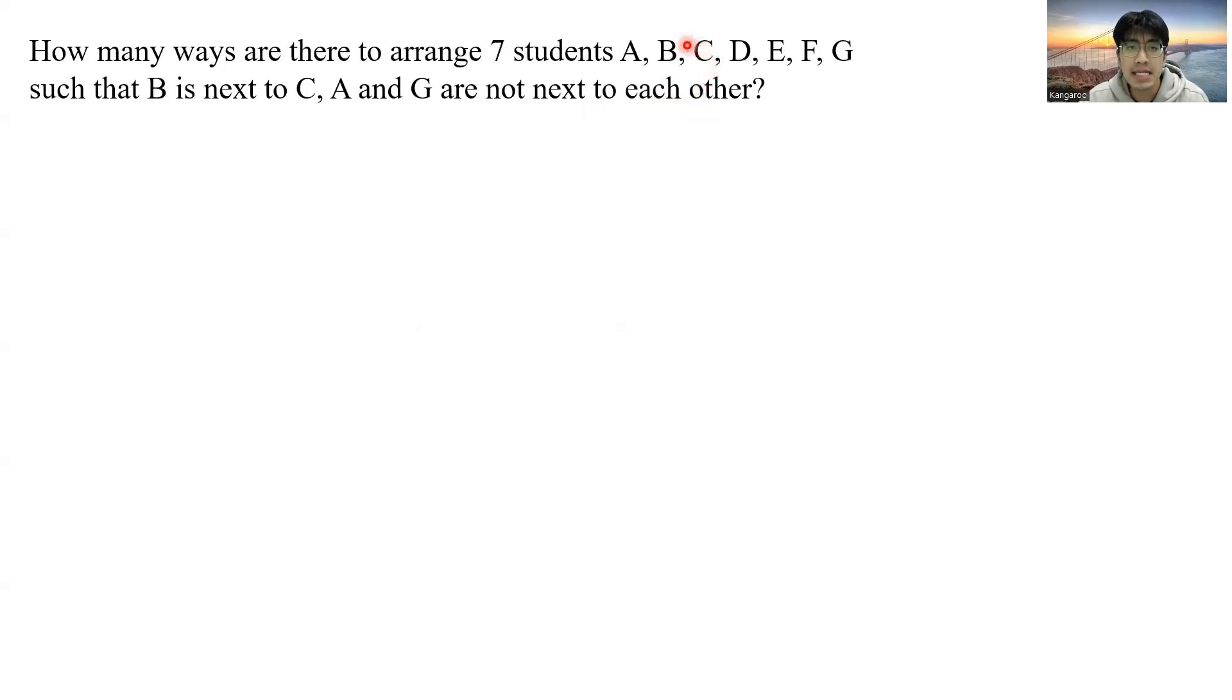Now, to make sure that B and C always stay together, let's first combine B and C. We bunch them together as one. So now we have one, two, three, four, five, six students. And since A and G are not next to each other, just for this moment, let us ignore A and G for now.